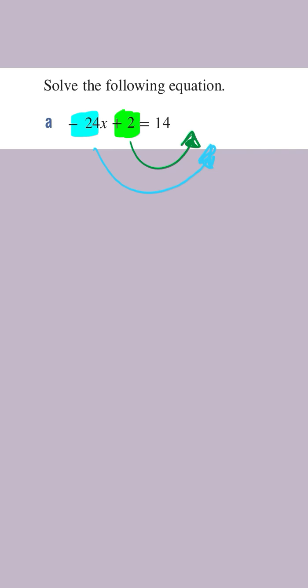Now whenever you move a number to the other side of the equal sign, you always do the opposite operation on the side that you move it to. And so if we move the plus 2 to the other side, we're going to subtract it, and so you're going to get minus 24x is equal to 14 minus 2, which is equal to 12.